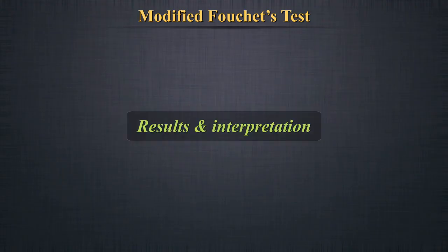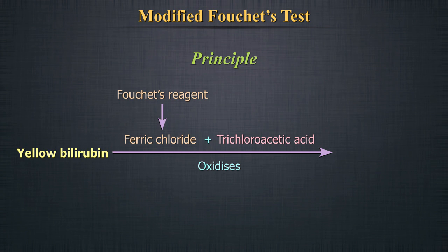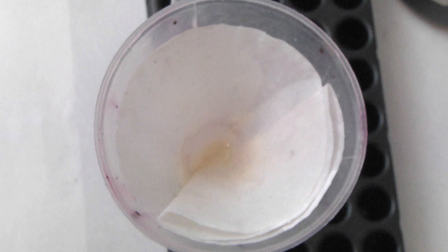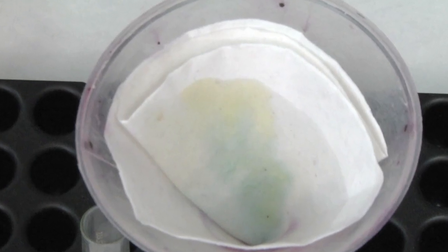Results and Interpretation: Ferric chloride present in Foscis Reagent, in the presence of trichloroacetic acid, oxidizes yellow bilirubin to green biliverdin. No change of colour indicates the absence of bile pigments. If the colour changes to green, bile pigments are present in the urine sample.